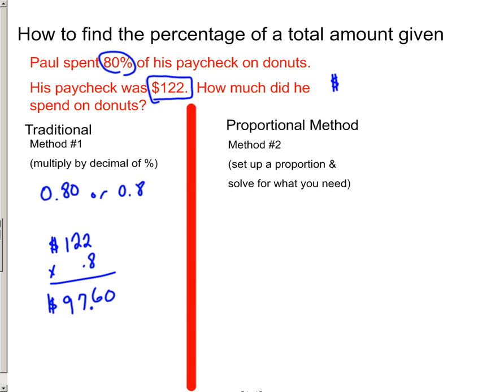It looks like he spent $97.60. I don't know if this is over the course of a week or if he did it all at once, but that is a lot of money to be spending for donuts.